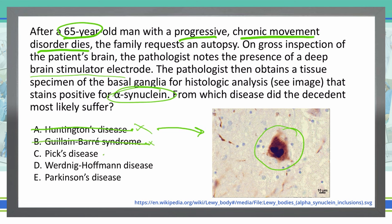Answer C: Pick's disease. Pick's disease is a neurodegenerative disease where we can see movement issues resembling Parkinsonism. So I'm leaving this one in for now as a possibility, though I'm not a hundred percent certain it's the answer.